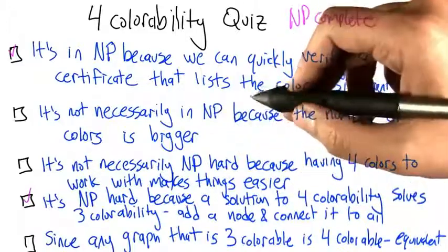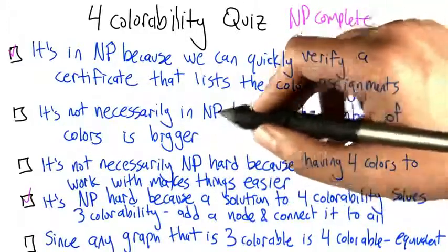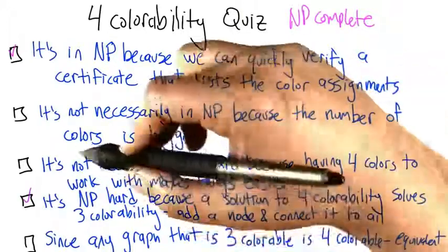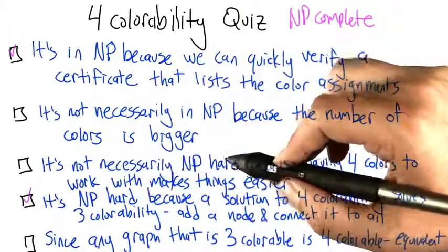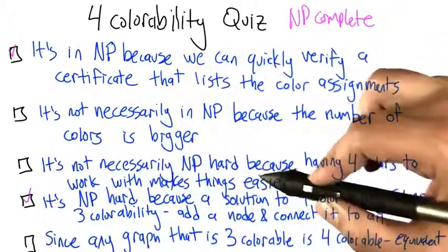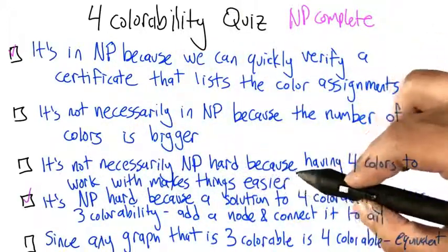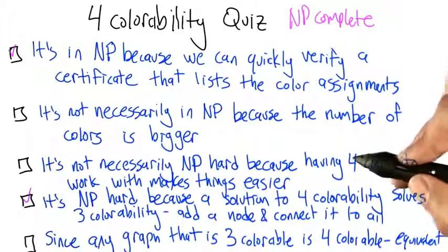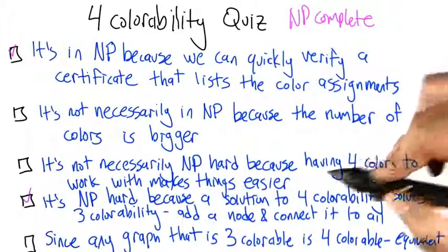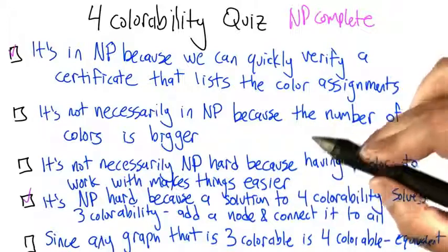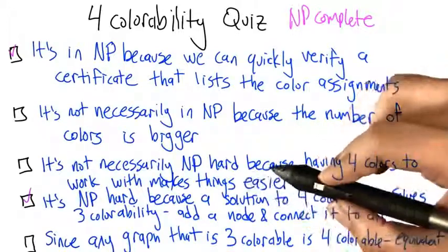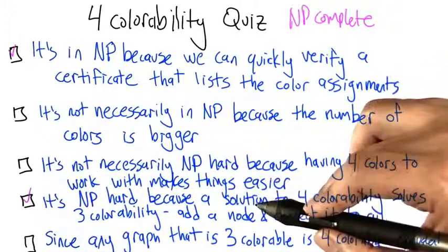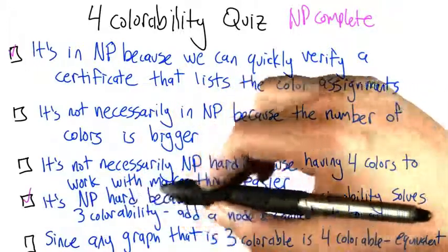It's not necessarily in NP because the number of colors is bigger — the first argument is the correct one. It's not necessarily NP-hard because having 4 colors to work with makes things easier. That is kind of true — 4 colors does give you a little bit more slack, and there are things that you can 4-color that you can't 3-color. But this argument is less compelling than the next argument that says it is NP-hard.